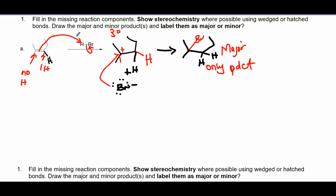The question says: fill in the missing reaction components. You need to show stereochemistry where possible using wedge or hashed bonds, and indicate major and minor products. Using Markovnikov's rule, identify your two sp2 carbons and determine which one has the most hydrogens — that's where the hydrogen of the acid goes. Here the acid is HBr, so Br ends up on the other carbon.